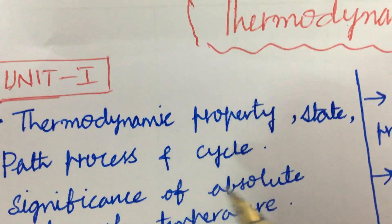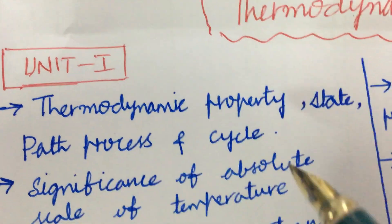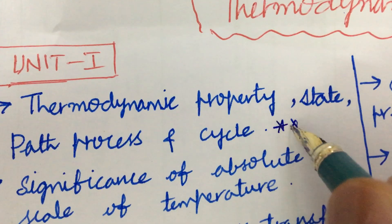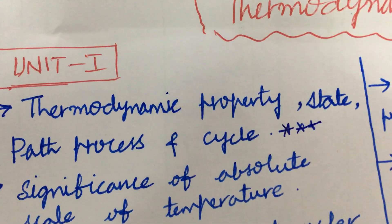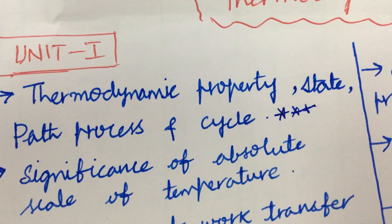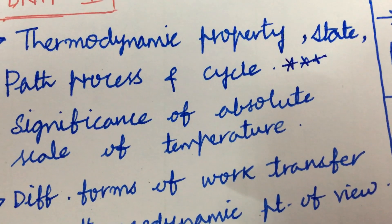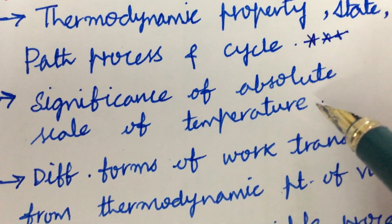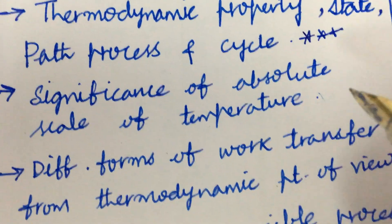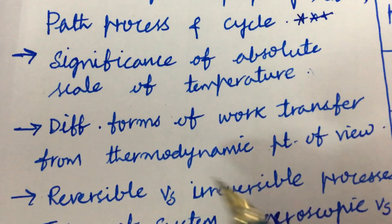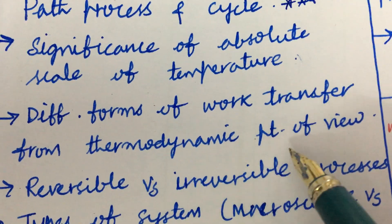The thermodynamic property and the state and the path process and the cycle is very important. Dear students, sometimes from JNTU they will be giving only the problem and derivation instead of the theory part from the course thermodynamics and the significance of absolute scale of temperature and different forms of work transfer from thermodynamic point of view.